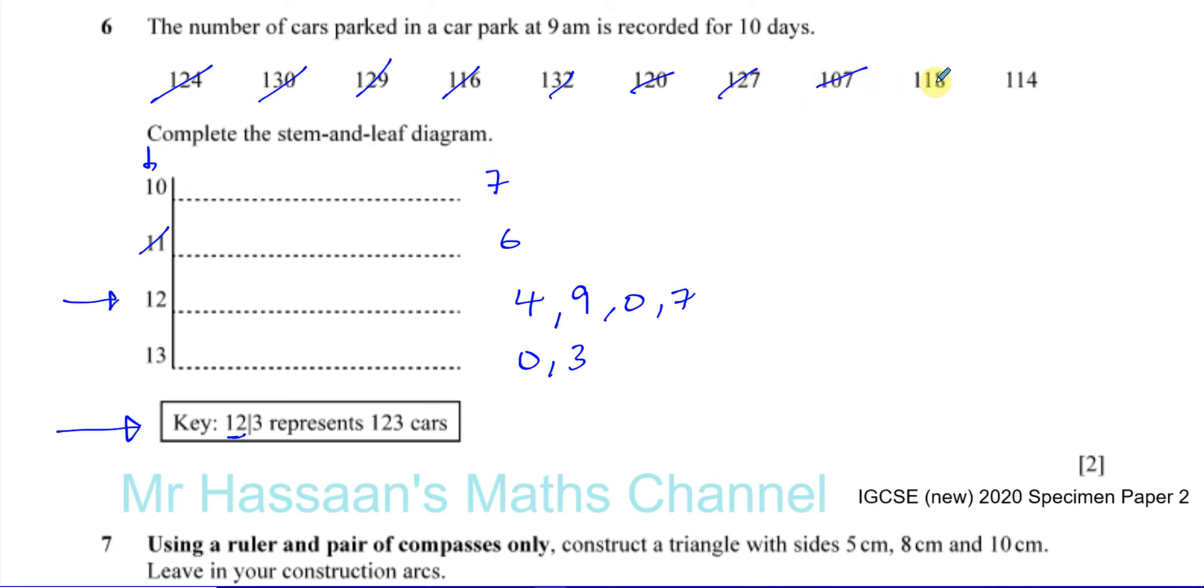107, 7 there. 118, should be an 8 there, and 114, should be a 4 there. And we've finished.